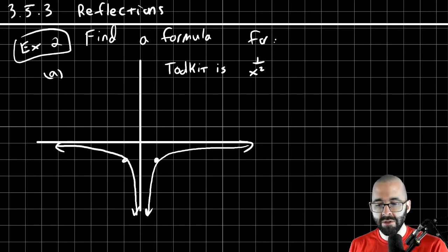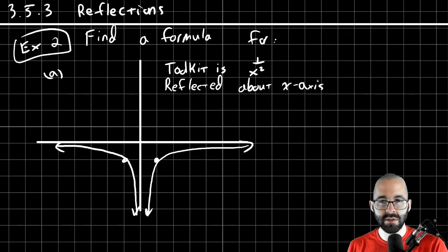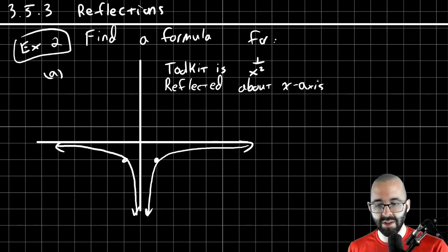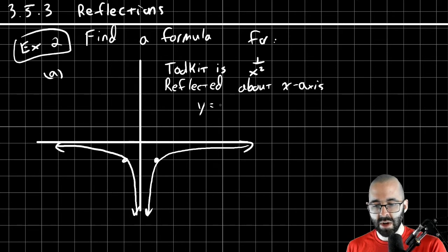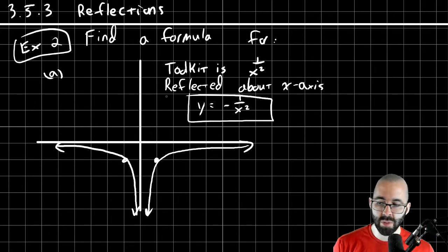But normally, that's positive on both sides. We're making it negative on both sides. Negative. We're reflecting it about what axis is this? The x-axis. It's a vertical change. It used to be up here. We moved it down. Vertical change means outside of the function. So now, our new function is y equals negative one over x squared. And that's our answer. And that's how we approach these.